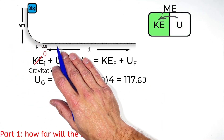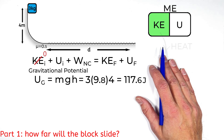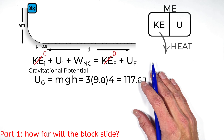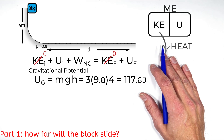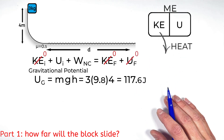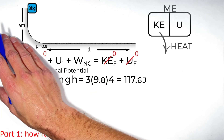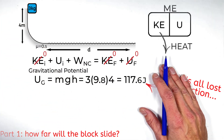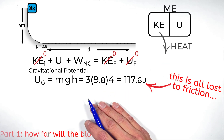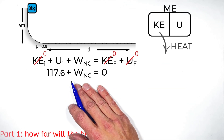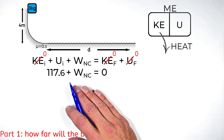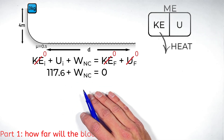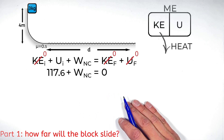As the block goes down the hill and across the rough surface, in the end the block is going to be stopped, meaning it's not going to have any kinetic energy. It's going to be sitting on the ground at a height of zero, meaning it has zero potential energy as well. So ultimately, all that's happening in this problem is the potential energy that the block starts with is all lost to friction. The initial potential — 117.6 joules — is all going to be lost to friction, meaning the work by friction is going to be negative 117.6 joules.